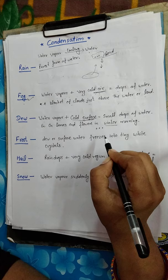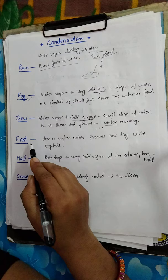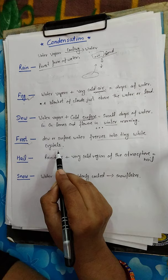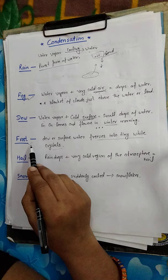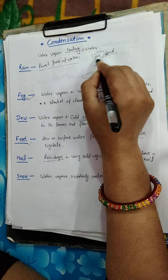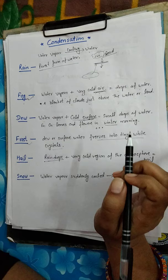Next is frost. Frost is when dew or surface water freezes into tiny white crystals. So when dew freezes, it becomes frost. Next is hail. Hail occurs when raindrops pass through a very cold region of the atmosphere, below the cloud.